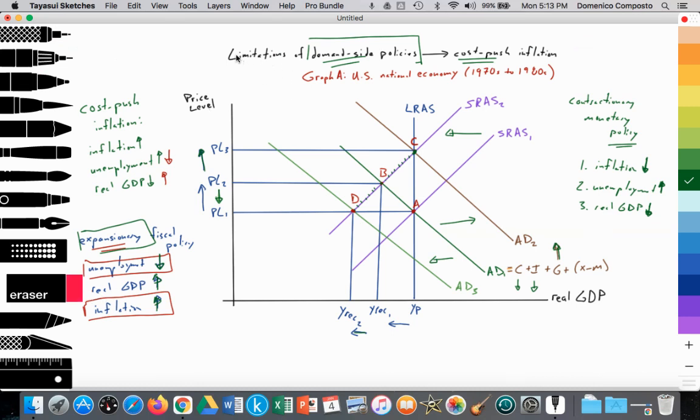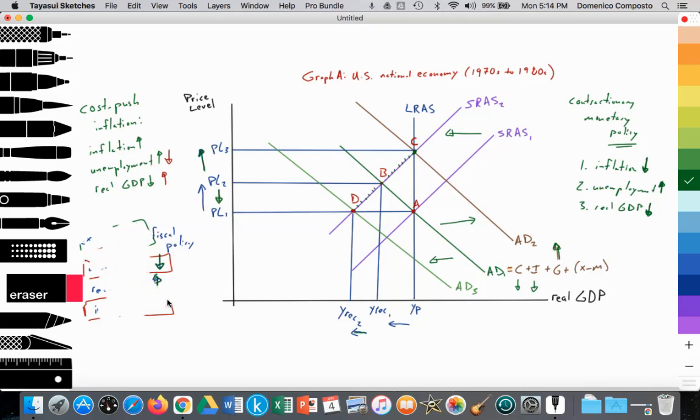Let's change a few labels here. We've looked at the limitations of demand-side. Now we're going to look at the solutions provided by Margaret Thatcher and Ronald Reagan in the 1980s. We're going to get rid of the expansionary. Ronald Reagan and Margaret Thatcher did not engage in expansionary fiscal policy. No expansionary fiscal policy.